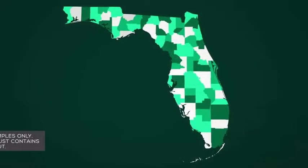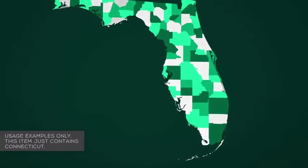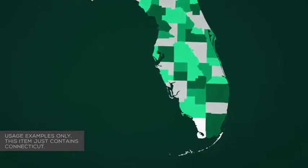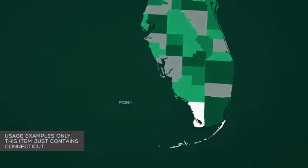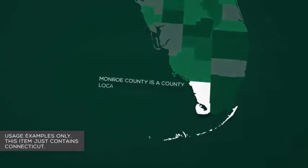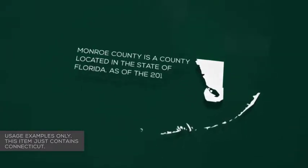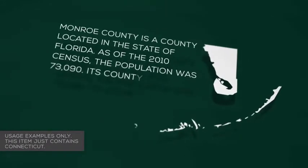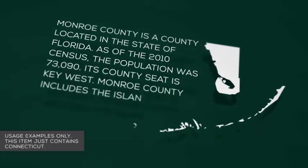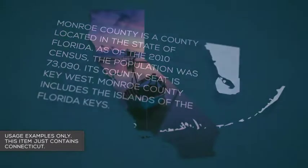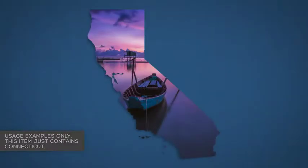Zoom in to areas of interest and hide the layers you don't need to focus on certain counties. Animate individual counties and add your own text and camera moves as required.